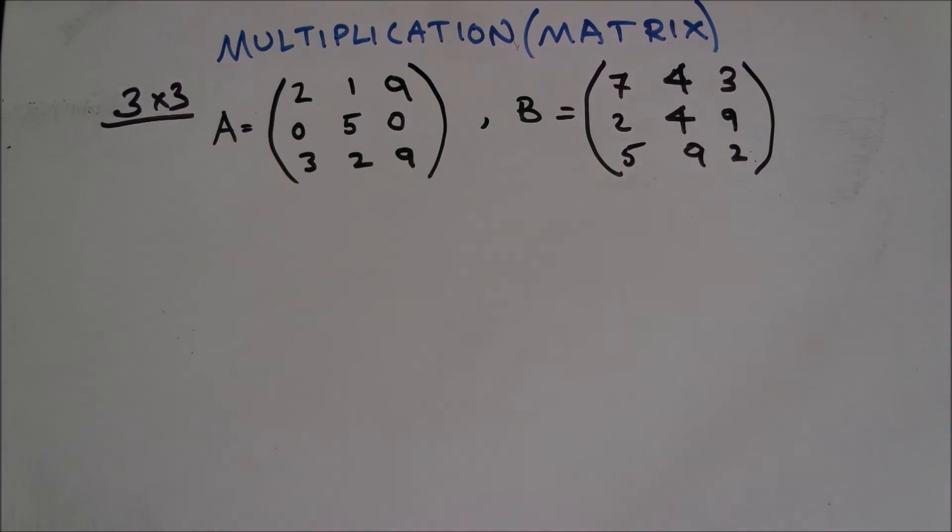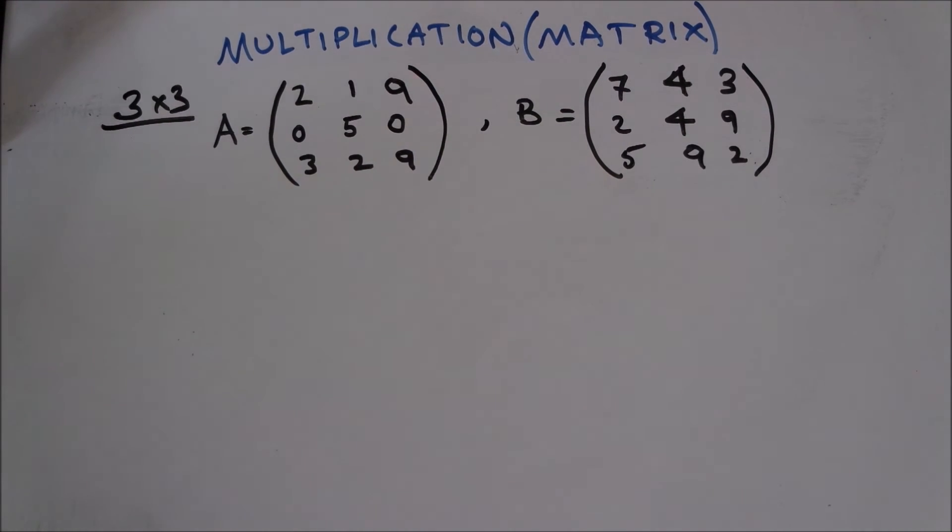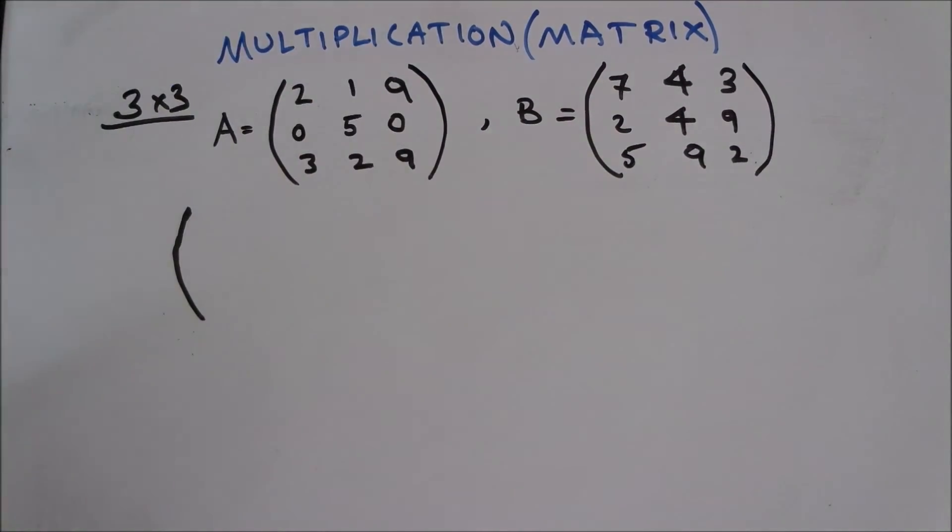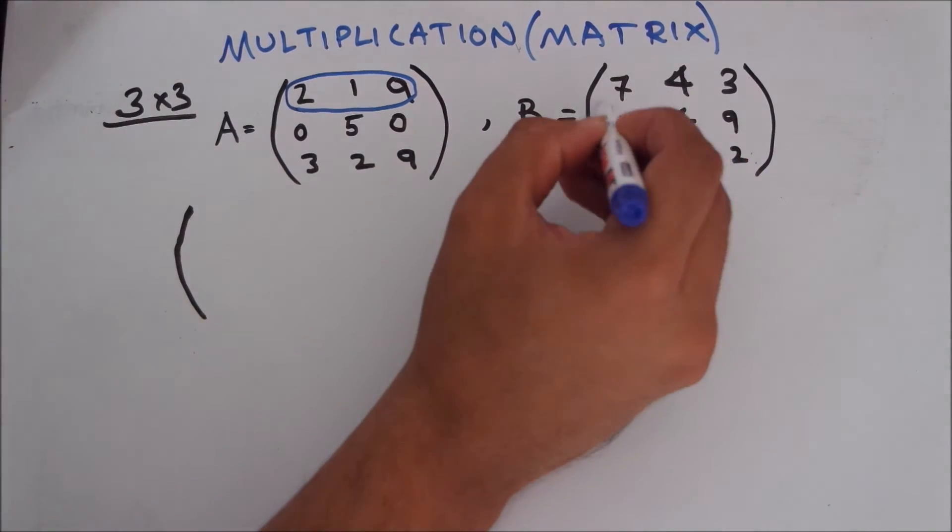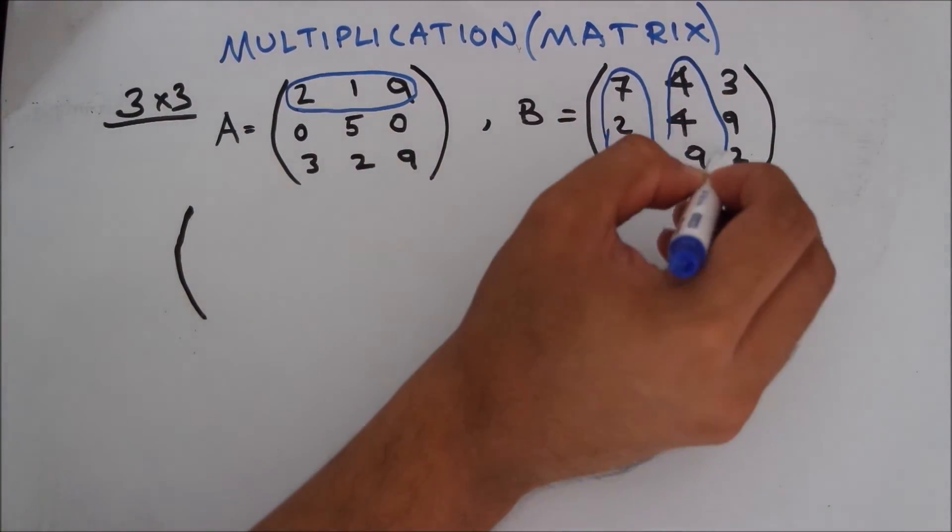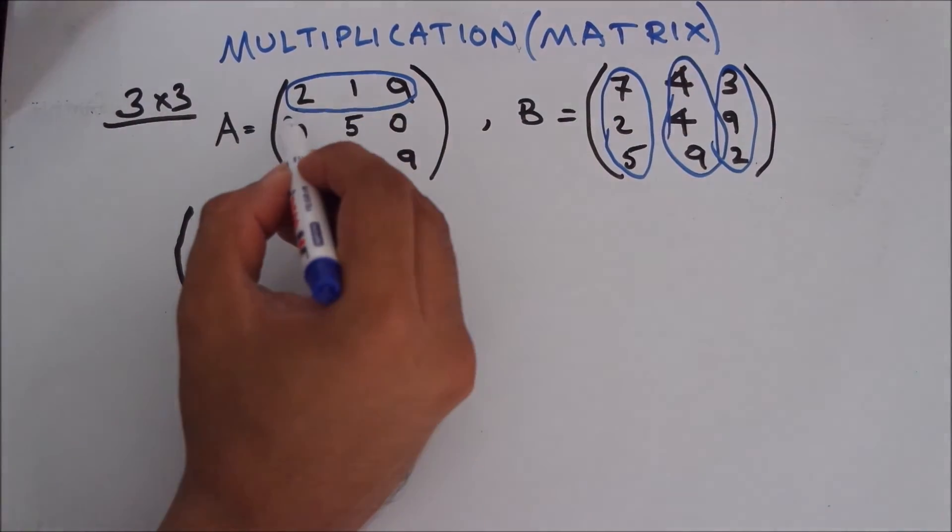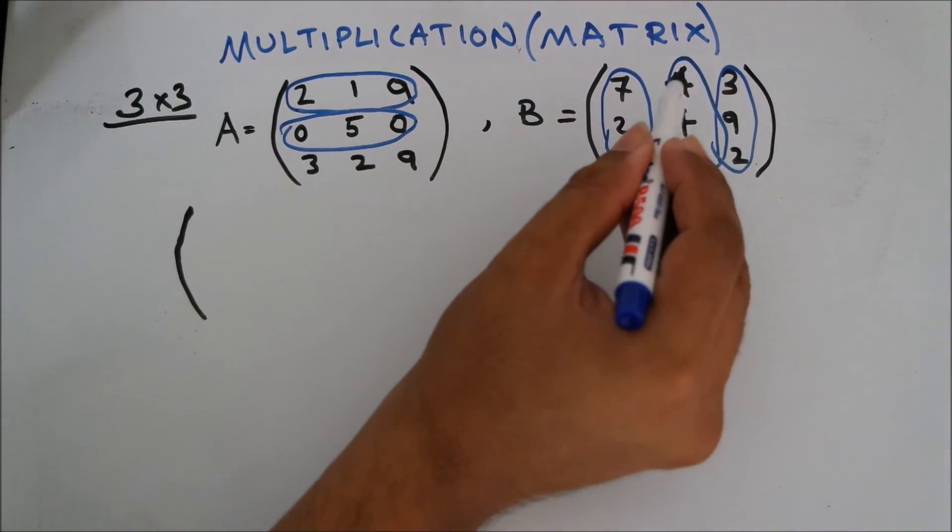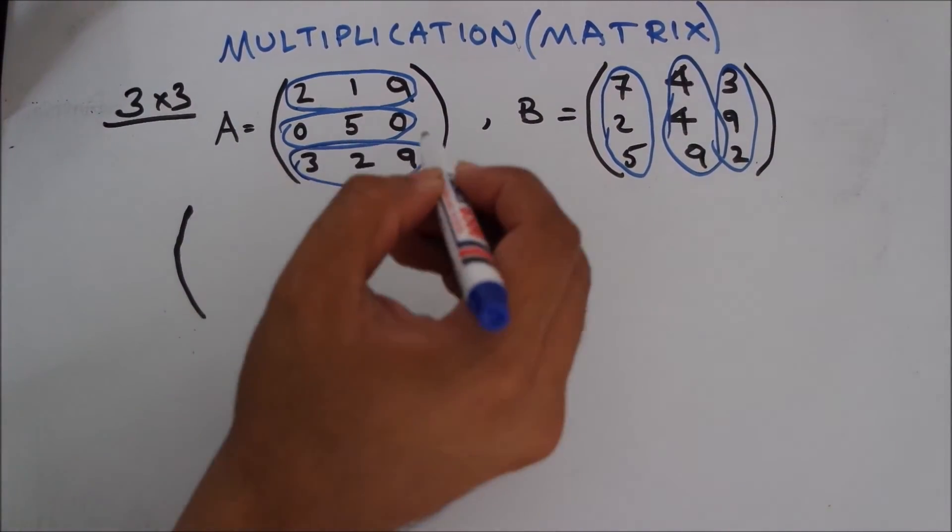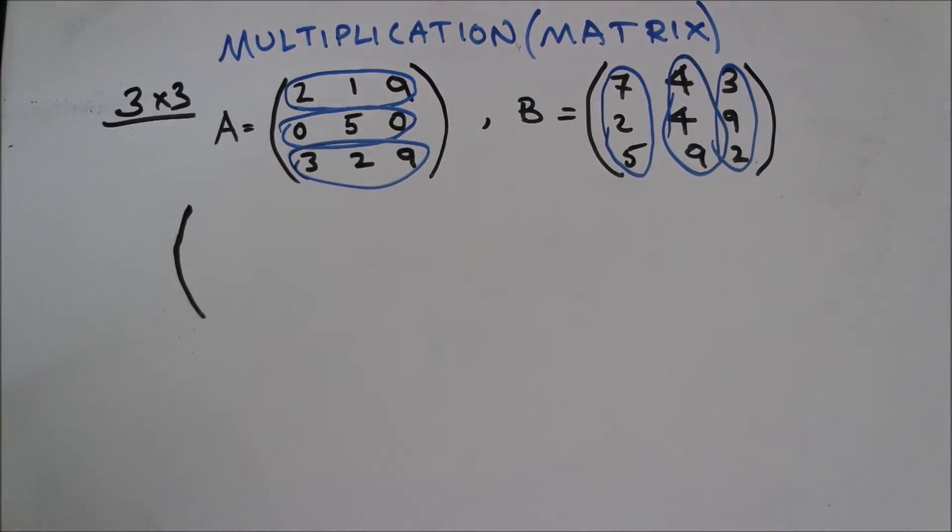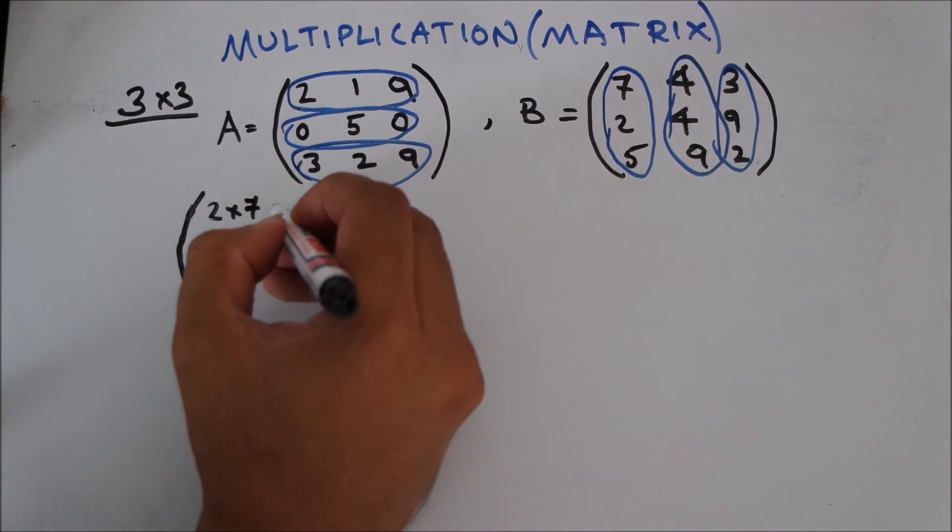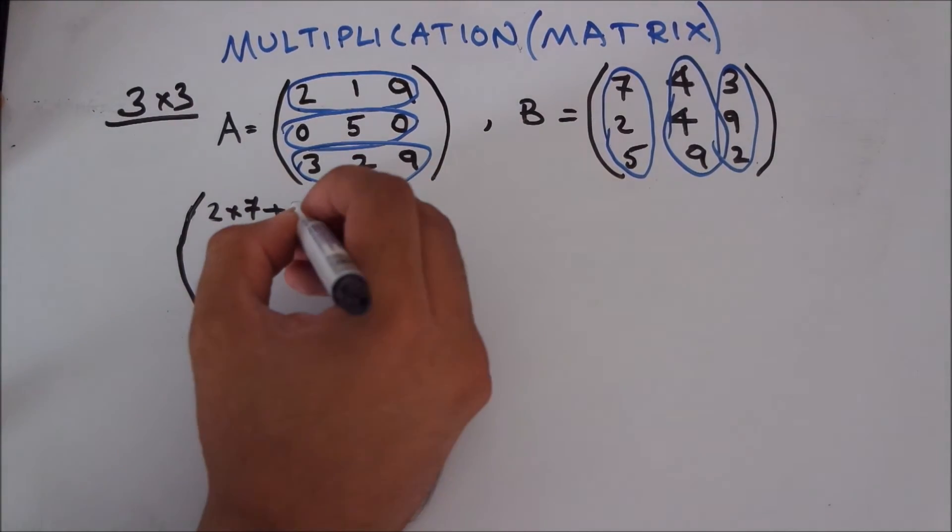I'll show you an example of 3 into 3 matrix now. For this one, we would have to just follow what we did on the 2 into 2 matrix, but it's just going to be a little bit elaborate. So always remember to go row by column. We first multiply this row into this column, and then this row again into this column, and then this row into this column. And later we move on to the other rows. For the second row, we multiply this row into this column, this column and this column again. And for the third row, we multiply this row into these three columns again.